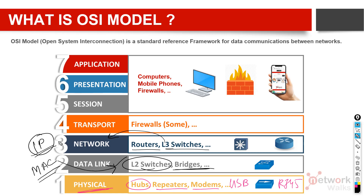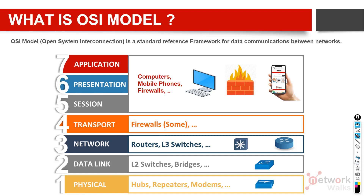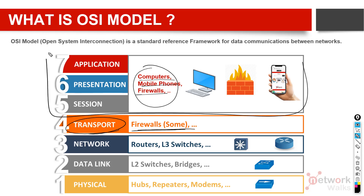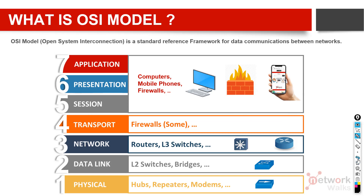IP addresses also belong to the Network layer, while MAC addresses belong to the Data Link layer. Firewalls handling TCP and UDP ports belong to the Transport layer. End devices like computers, mobile phones, and Layer 7 firewalls all belong to the Application layer. This is the OSI model, and it is very important for network fundamentals.